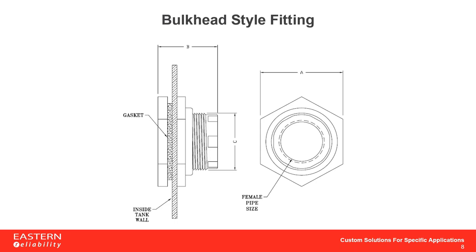Bulkhead style fittings are one of the most common types used. They're ideal for any location on small tanks. On larger tanks over 3,000 gallons, you want to only use these bulkhead fittings on the top flat areas of the tank. Eastern Reliability and ASVIN do not recommend four-inch bulkhead fittings on any sidewall, as it's difficult to create a proper seal on the curvature of the tank. Bulkhead fittings are installed through a hole in the tank and thread onto themselves with a gasket on the inside tank wall, with female threads on the inside of the fitting to allow piping or equipment to be installed from both ends.